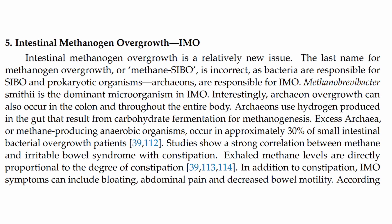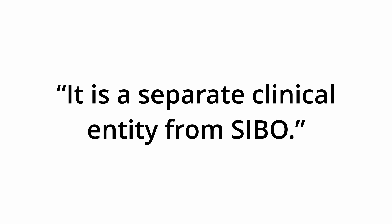IMO, or intestinal methanogen overgrowth, is quite simply an overgrowth of intestinal archaea — their own unique group of organisms. This has often been called 'methane SIBO,' and that's not actually correct, because we're not dealing with a bacteria. One author in a publication stated that 'methane SIBO' is incorrect, as bacteria are responsible for SIBO, whereas archaeans are responsible for IMO. Another professional publication stated it is a separate clinical entity from SIBO — though some studies still refer to it as methane-positive SIBO. It is not a bacteria and it's not linked only to the small intestine.